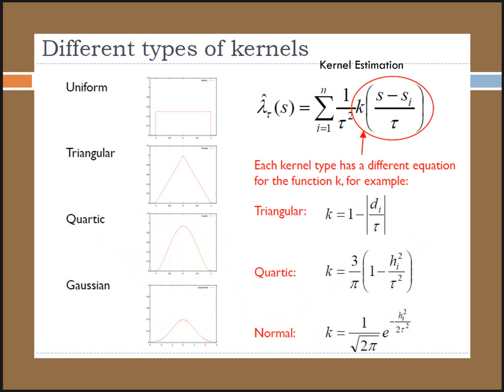The size of the bandwidth is a tough thing to deal with. It really depends on the entity that you're trying to map densities of. You do need to experiment with it. There's just not a lot of agreement on how or what the best bandwidth is for any given scenario.